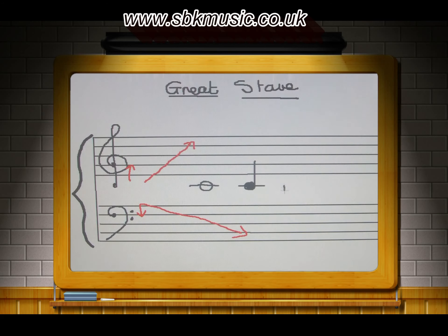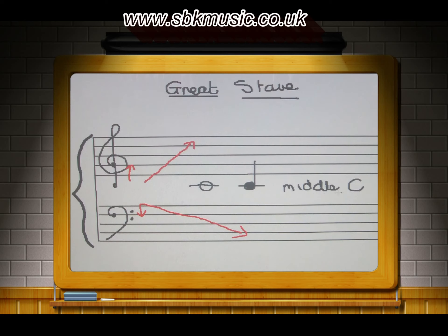It's called middle C because it is in the middle of the great stave. If you look carefully at your piano or keyboard, it is not exactly in the middle — it is usually to the left of the middle. The 'middle' refers to being in between the treble and the bass stave. Middle C, in the middle of the great stave — easy to read, easy to write.